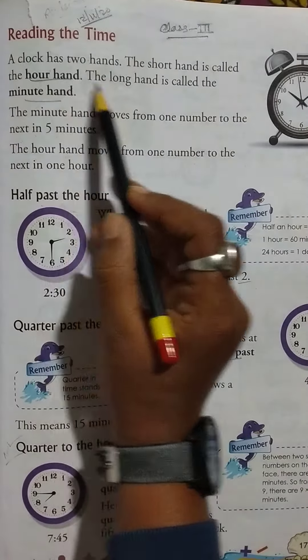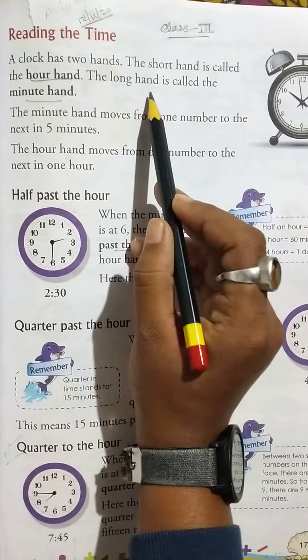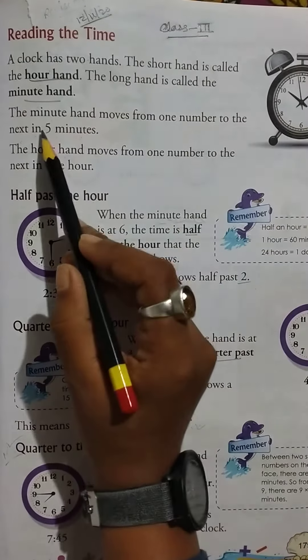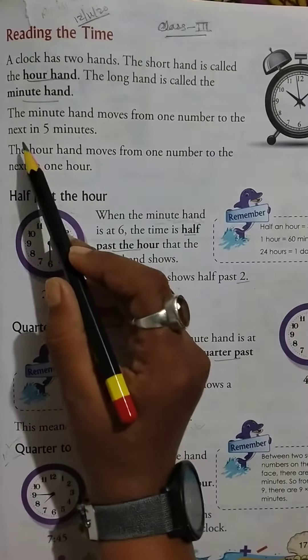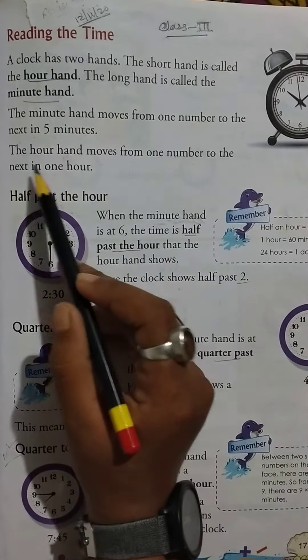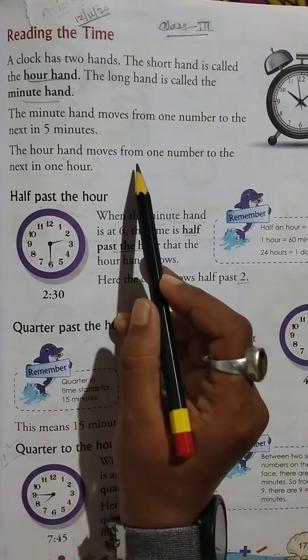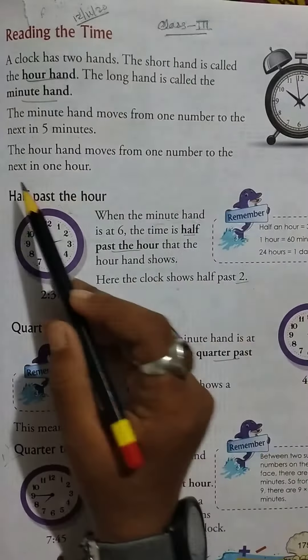is called the hour hand, and the long hand is called the minute hand. The minute hand moves from one number to the next in 5 minutes. The hour hand moves from one number to the next in 1 hour.